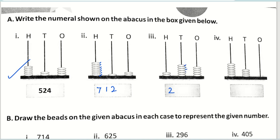The next one — how many hundreds? Two hundreds. How many tens? One, two, three, four, five, six — six tens. How many ones? One, two, three, four, five — five ones. So the answer is two hundred sixty-five. The same way — how many hundreds? Seven hundreds. How many tens? One, two, three, four — four tens. And how many ones? Zero. So the answer is seven hundred forty.